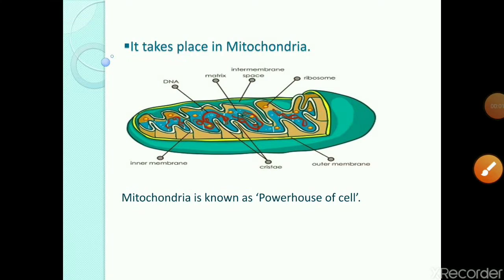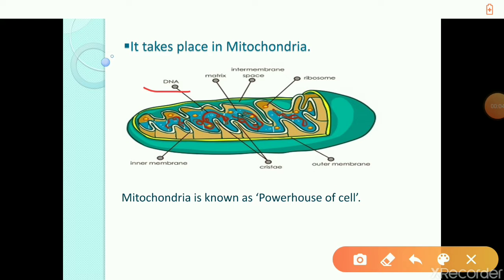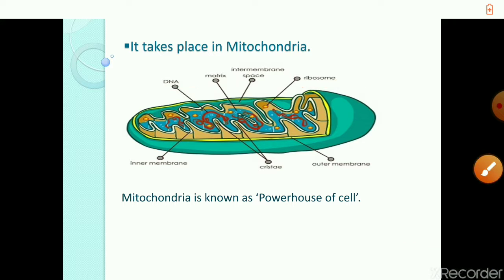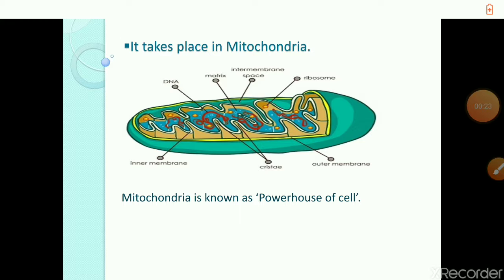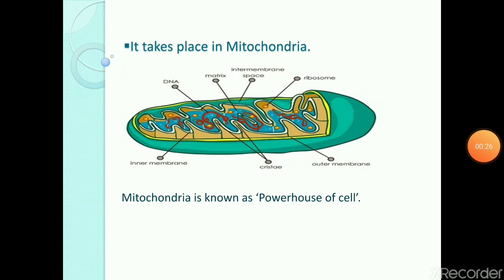The mitochondrial matrix contains mitochondrial DNA, ribosomes, some soluble enzymes, small organic molecules, nucleotide co-factors, and some inorganic ions. Mitochondria is known as the powerhouse of the cell because ATP is referred to as the currency of the cell, and these ATPs are generated by mitochondria. That's why mitochondria is known as the powerhouse of the cell.